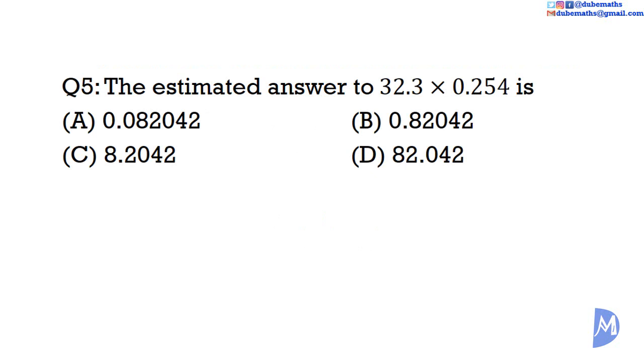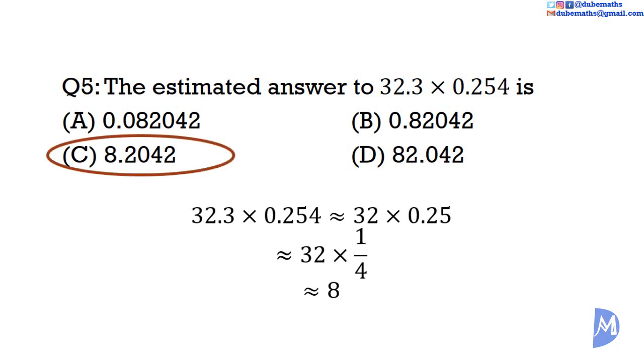Question 5. The estimated answer to 32.3 multiplied by 0.254 is? I see 32 multiplied by 0.25 which is equal to 32 multiplied by a quarter. The 4 and the 32 cancels, approximately 8. Our options are 0.08, 0.82, 8.2 and 82. Of course only 8.2 is approximately equal to 8. The answer is C.